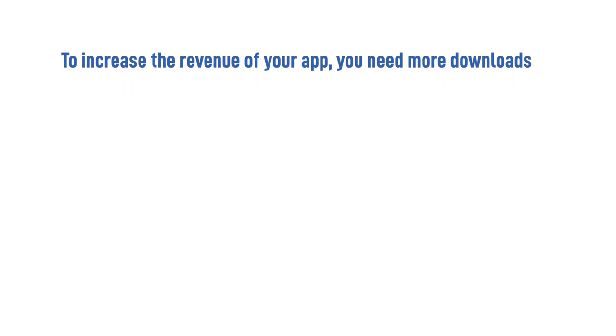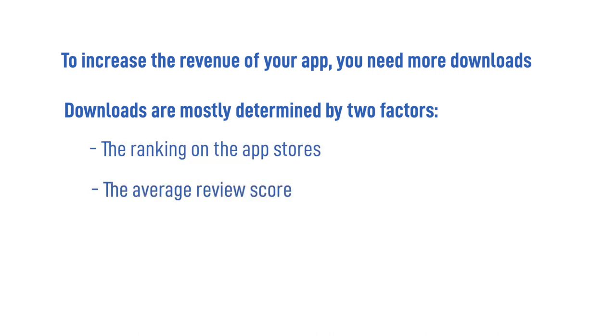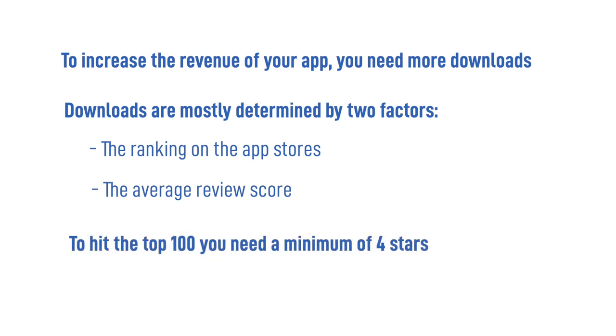So let's summarize what we've said so far. To increase the revenue of your app, you need more downloads. Downloads are mostly determined by two factors: the ranking on the app stores and the average review score. To hit the top 100, you need a minimum of 4 stars. At this point, the question that comes next is: how do I get a high star rating?